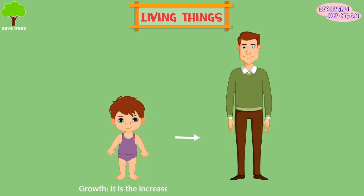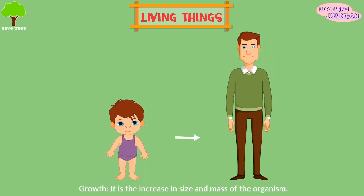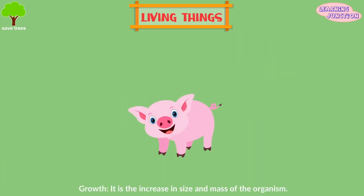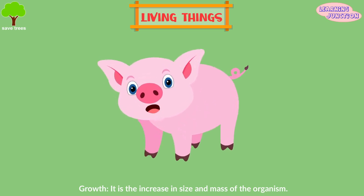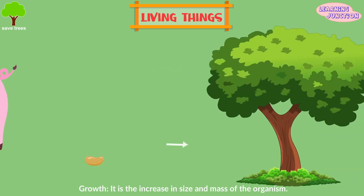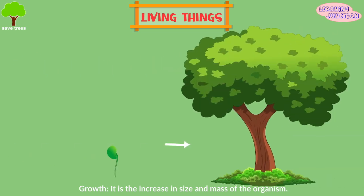Growth. A human child grows into an adult. In the same way, a young animal grows into an adult animal, and a young plant will grow into an adult plant.